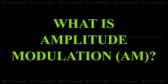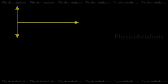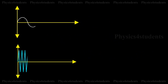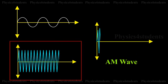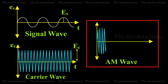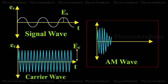What is amplitude modulation? AM. When the amplitude of high frequency carrier wave is changed in accordance with the intensity of the signal, the process is called amplitude modulation.